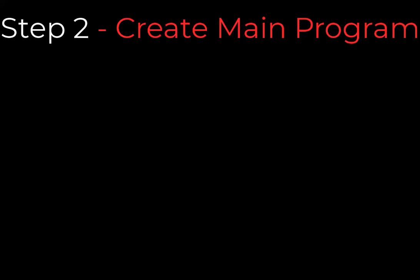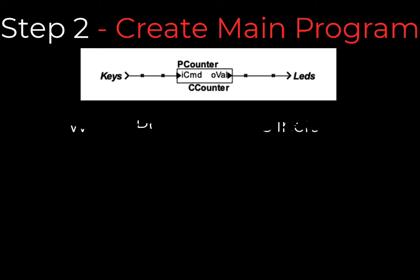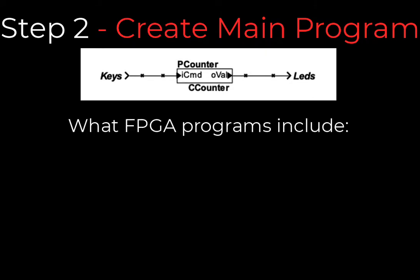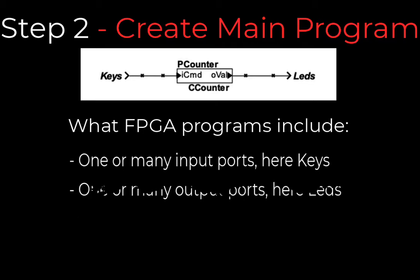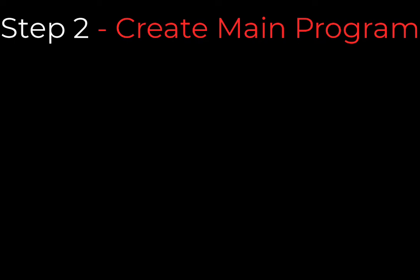The programming of FPGAs begins with a schematic. Here is the schematic of the counter program. All FPGA programs include one or many input ports — here, keys — one or many output ports — here, LEDs — and one or many interconnected components for processing — here, the CC counter. An FPGA program reads the input peripherals, performs computation defined in the components, and controls the output peripherals.